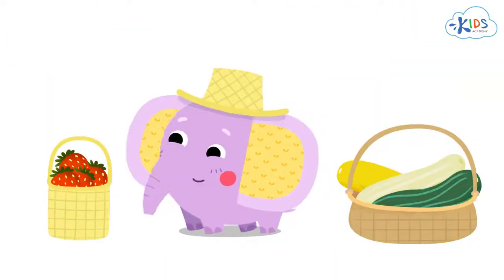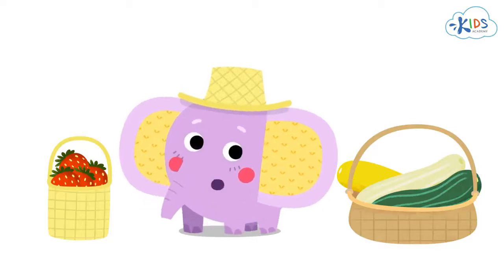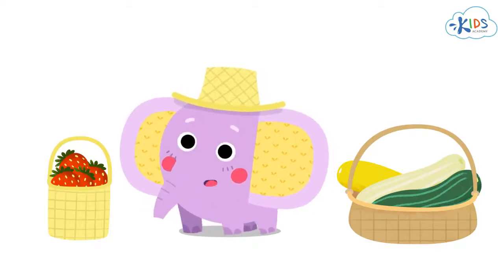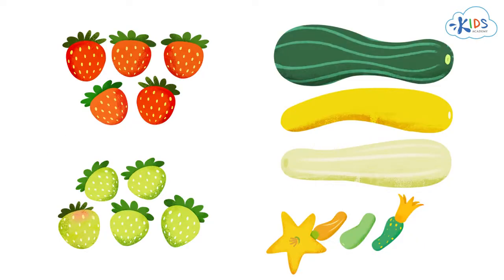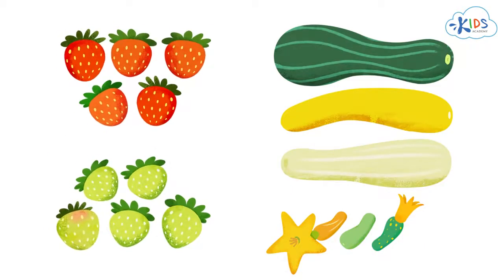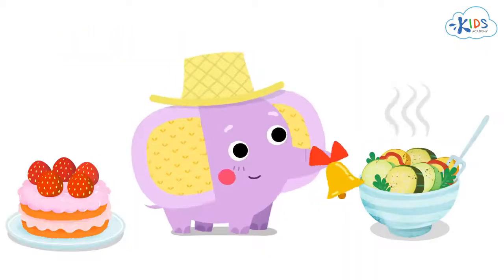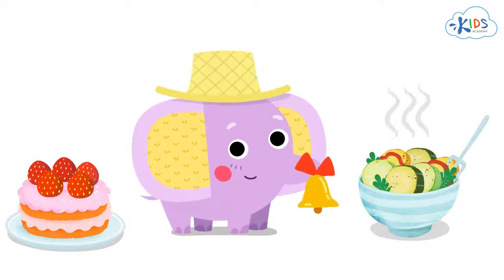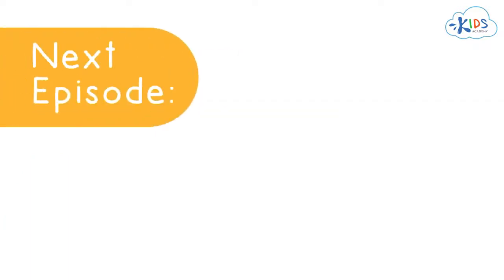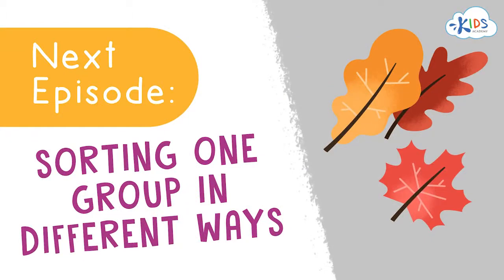I've collected all the ripe strawberries and squashes. We'll make a great dinner from them. And we could do it, because we know how to sort objects by color and size. Next time, we'll talk about sorting the same group of objects different ways. See you soon!